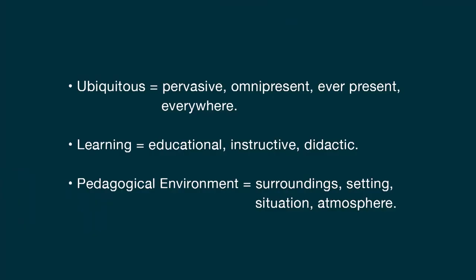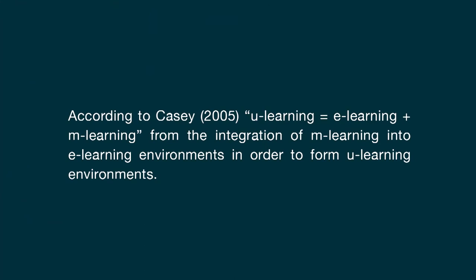A ubiquitous learning environment is any setting in which students can become totally immersed in the learning process. The word 'ubiquitous' means pervasive, omnipresent, ever-present, and everywhere. Similarly, 'learning' means educational, instructive, and didactic. A 'pedagogical environment' means a surrounding setting, situation, or atmosphere. So a ubiquitous learning environment is a situation or setting of pervasive education. According to Cassie, u-learning equals e-learning plus m-learning — formed from the integration of m-learning into an e-learning environment. U-learning is a learning paradigm that takes place in the ubiquitous computing environment, enabling learning the right things at the right place and time in the right way.